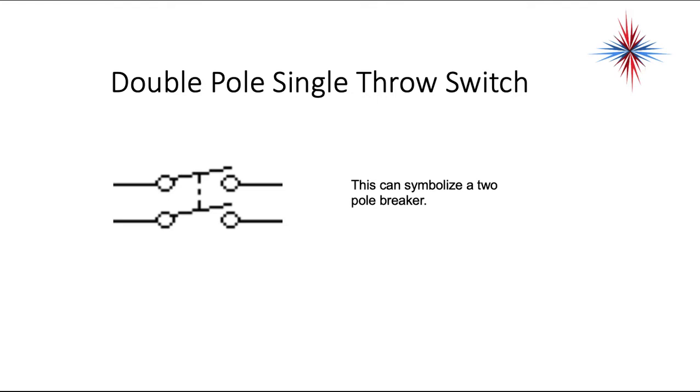This is a double pole single throw switch. This can symbolize a two pole breaker as well. It opens both lines at the same time. This would be like your double breakers for stoves, dryers, and air conditioners, and some air handlers in your breaker panel.